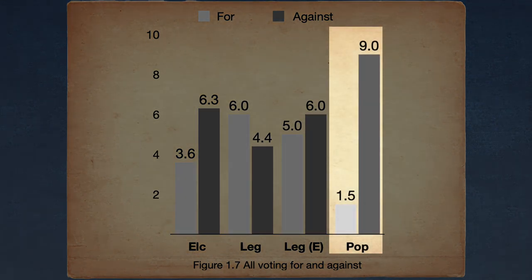Meanwhile, the popular vote was ironically the most unpopular system debated at the Constitutional Convention. Holding two votes, only the state of Pennsylvania voted for the system twice, and Delaware voted in favor once. The popular vote averaged 1.5 votes for and 9 votes against.